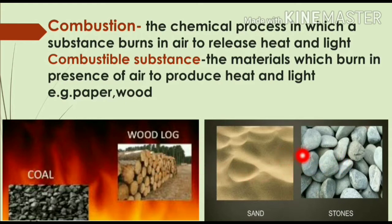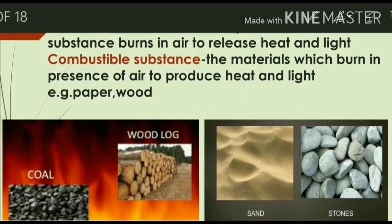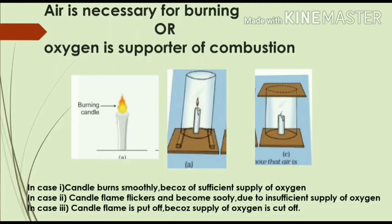Combustion is a process of burning a material in air to release heat and light. The substances which undergo combustion are known as combustible substances — for example, coal and wood. Whereas sand and stone do not catch fire and do not burn in air to produce heat and light, so they are known as non-combustible materials.